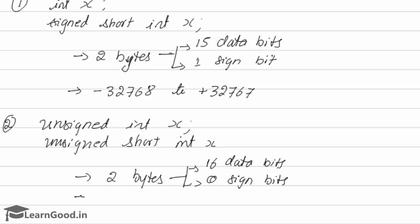When there is no sign bit, the values cannot be negative. The value will be only positive. It starts from 0. This goes up to 2 raise to 16 minus 1. That is 2 raise to 16 minus 1. That comes down to 65,535. That is the maximum value which you can store in an unsigned short int x.